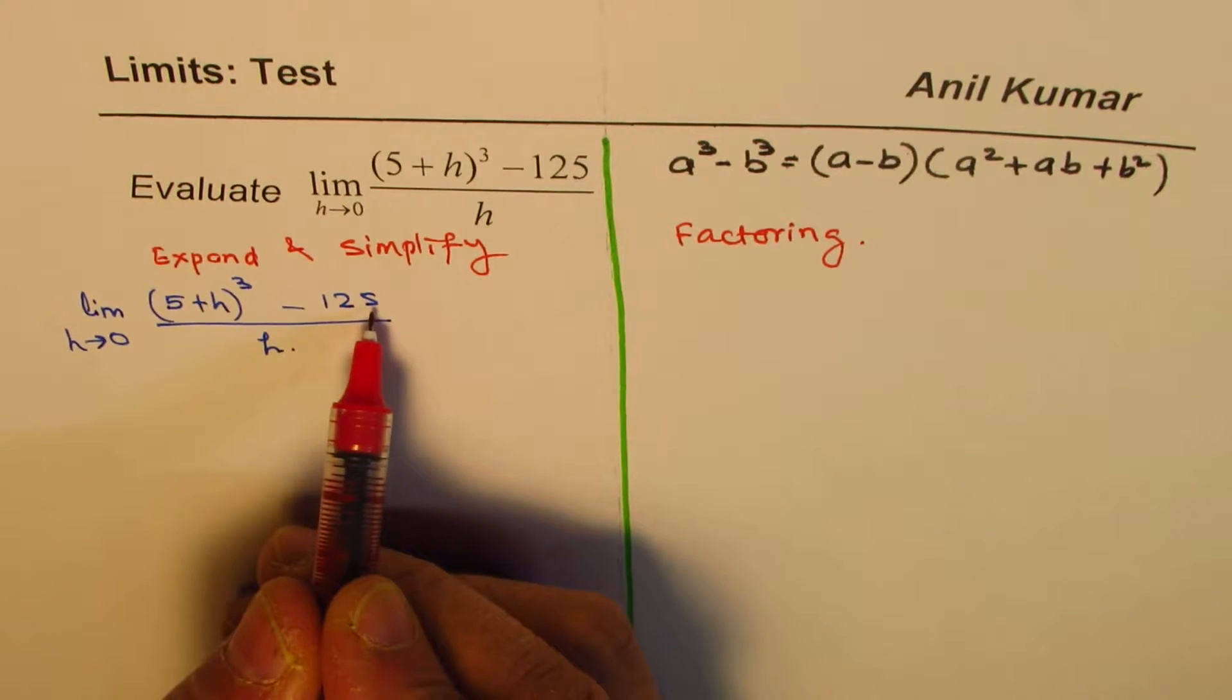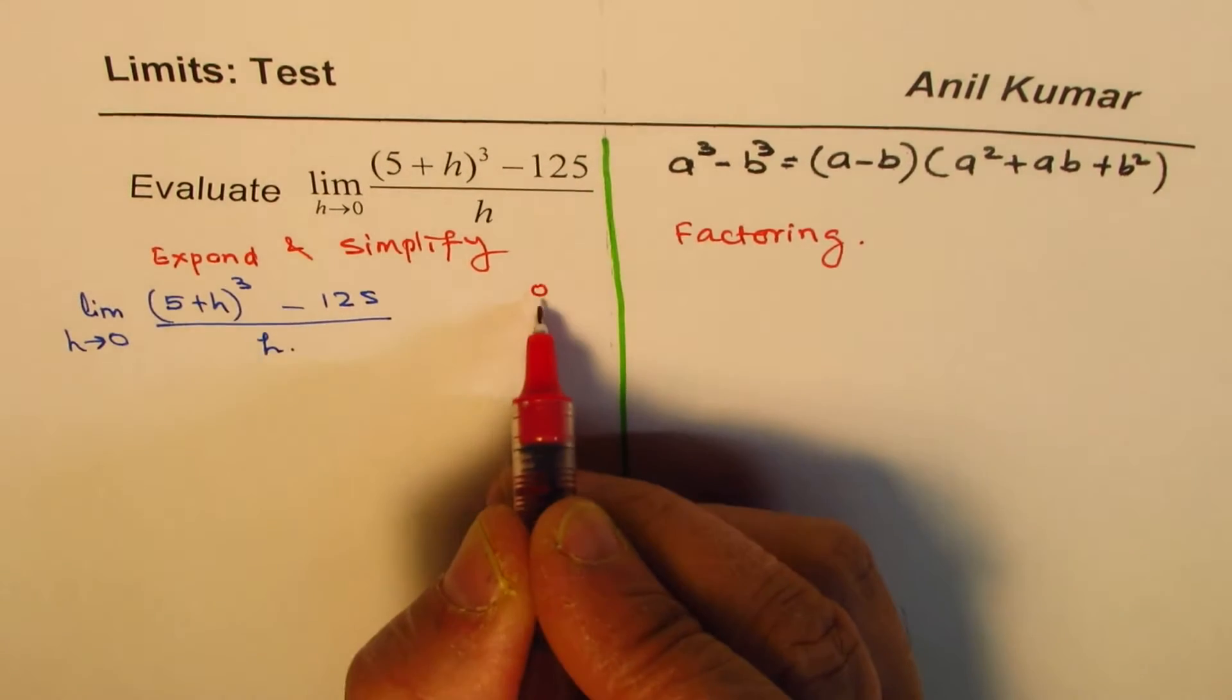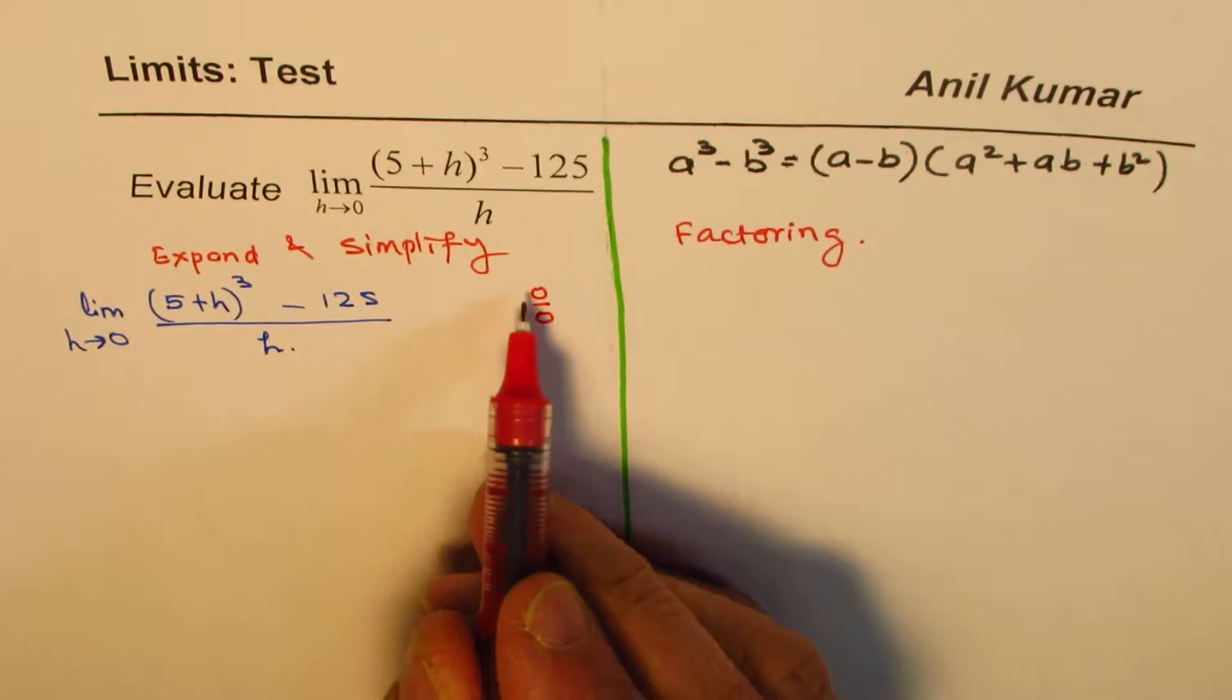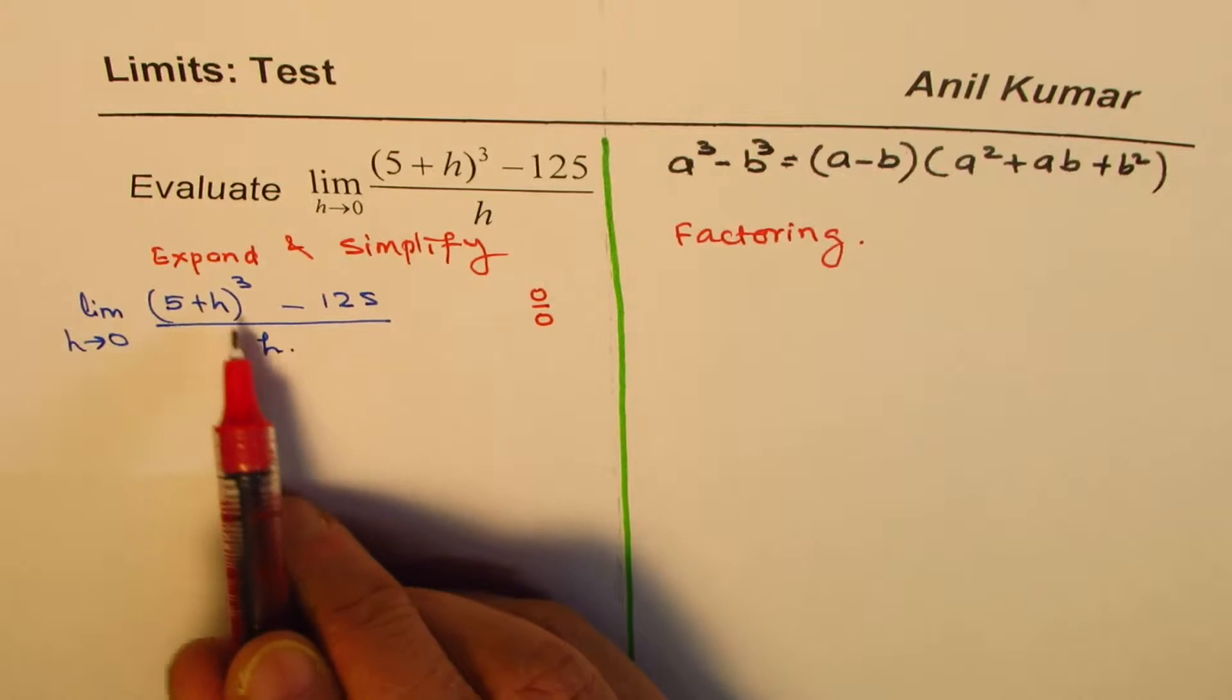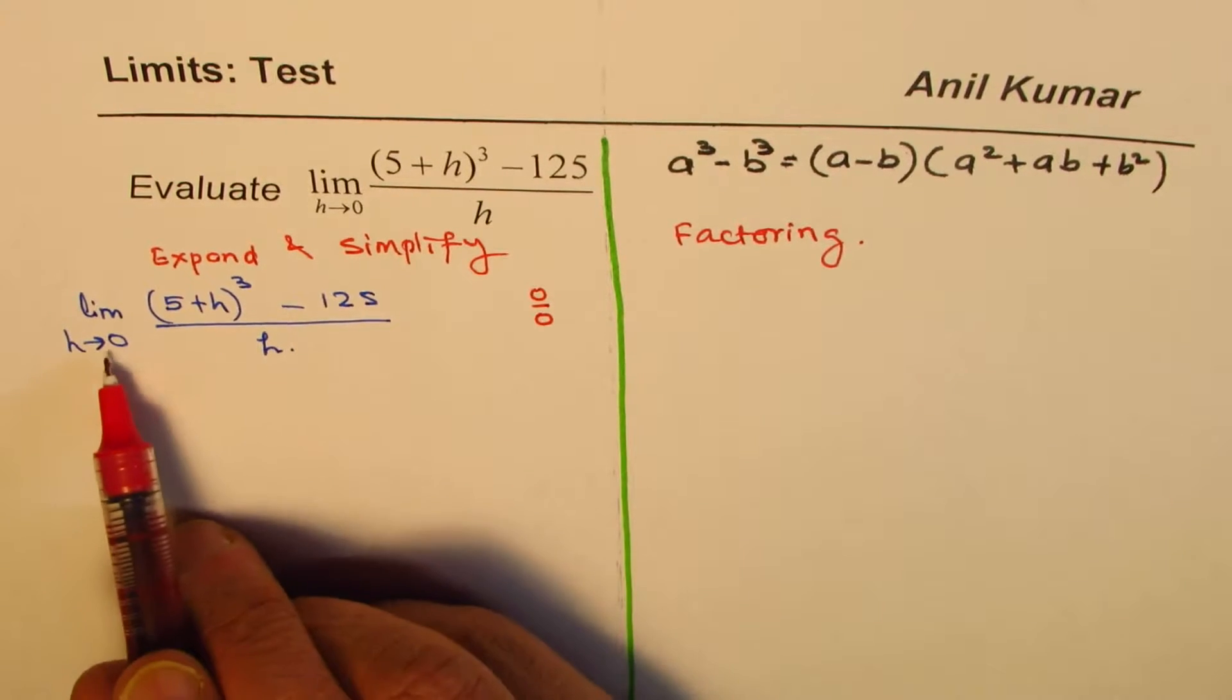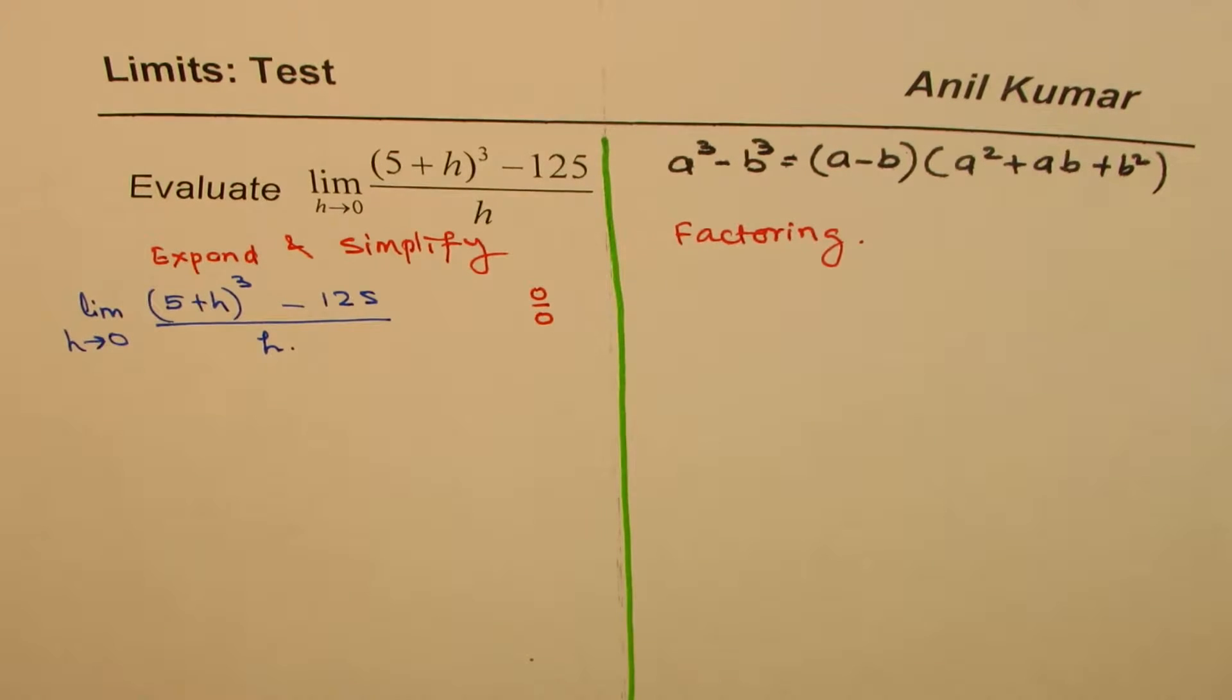I get 5 cube minus 125, and that is 0. So, 5 cube is 125, so we get 0 over 0. When you get 0 over 0, it indicates that there is a factor of h in the numerator. That makes this 0, right? So, that gives you an idea that factoring also is a good technique.